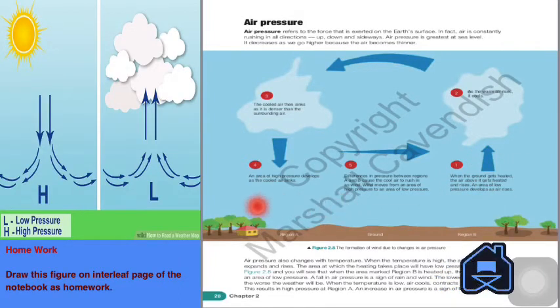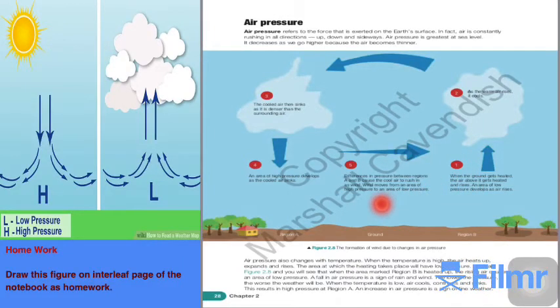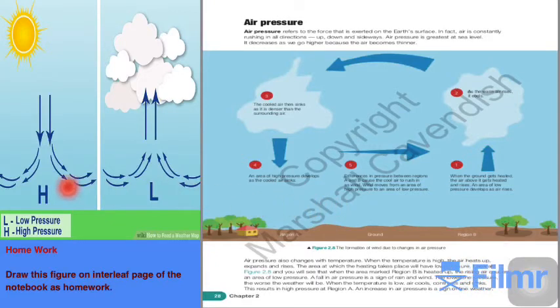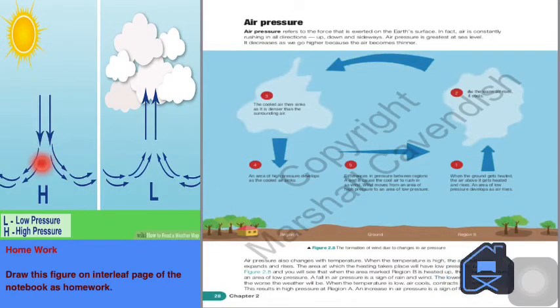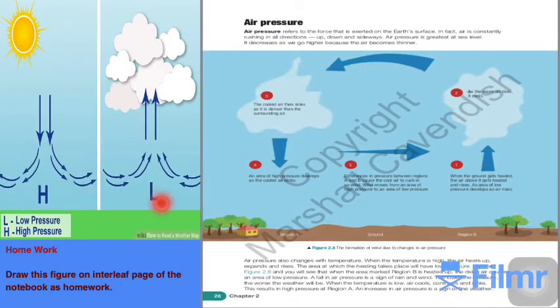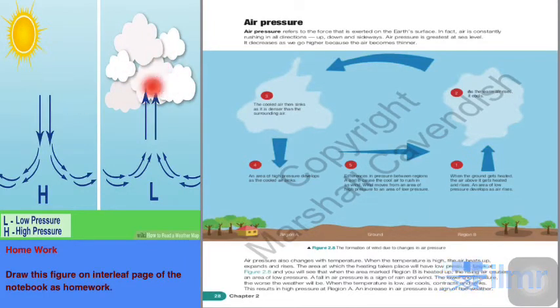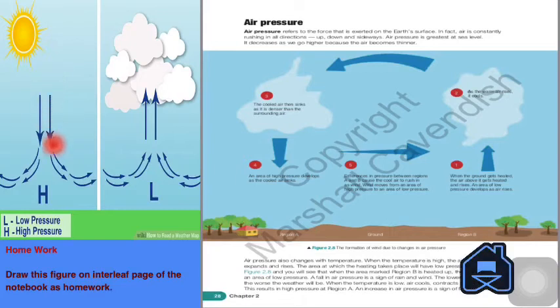The difference between A and B regions causes the cold air to rush in as wind. Wind moves from an area of high pressure to an area of low pressure. Here in the low pressure, wind heats up, goes up, then cools down there, and then in region A it sinks.